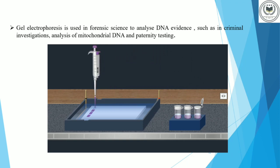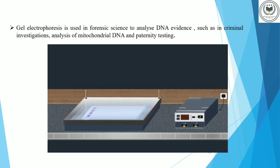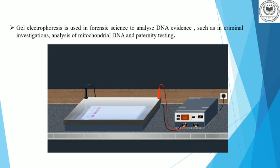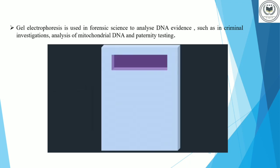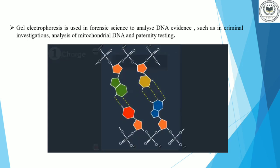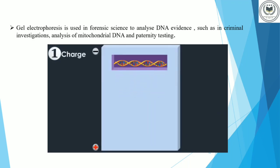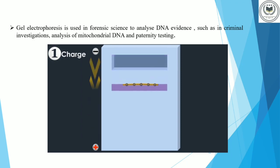After adding the samples into the wells, a lid is placed on the electrophoresis tank. Then an electric current is applied to pull the samples through the gel. Based on their charge and size, the DNA molecules will travel through the gel at different speeds. The DNA molecules have a negative charge because of the phosphate groups in their sugar-phosphate backbone. Therefore, when placed in an electric field, DNA fragments start moving through the matrix of the gel towards the positive pole.